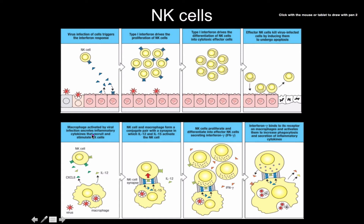Nothing in the immune system works as a one-way, one-thing pathway. Everything has multiple dynamic factors, and so even though natural killer cells kill infected cells, they're not going to clean up that infection alone — we need macrophages there as well, both to help clean up debris and to help fight off the infection. Macrophages are activated by the viral infection and secrete cytokines that recruit and stimulate natural killer cells.